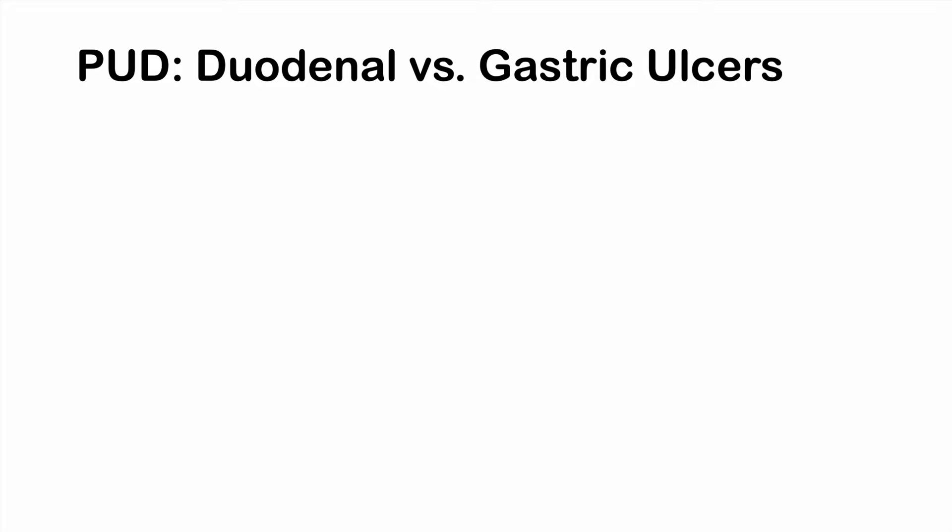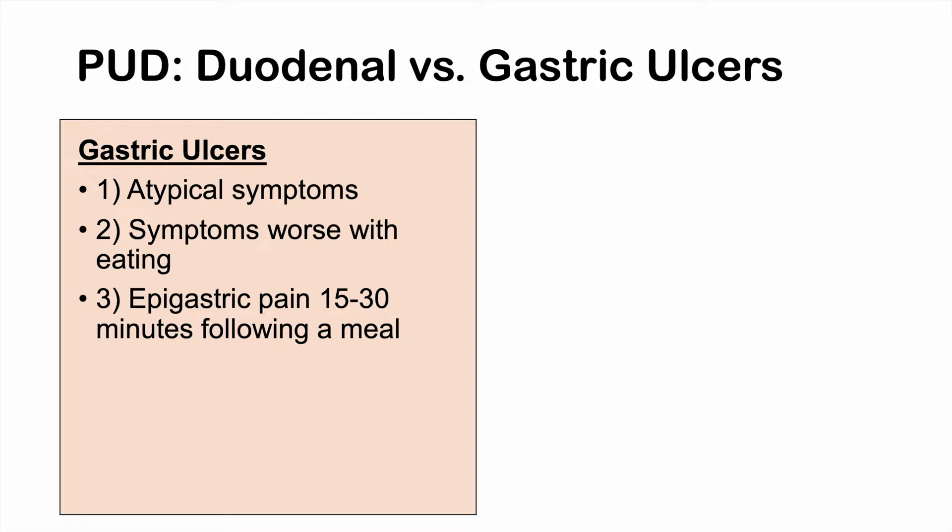With gastric ulcers, patients are more likely to have atypical symptoms. Symptoms are worse with eating, and pain or discomfort in the epigastric area occurs roughly 15 to 30 minutes following a meal. This is because eating causes the stomach to become full and gastric acids to be secreted, which then irritate the ulcers — and it takes some time for that gastric acid and digestive processing to occur.